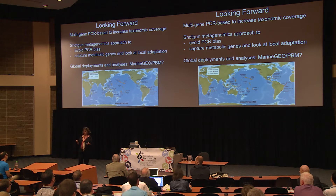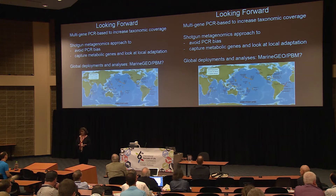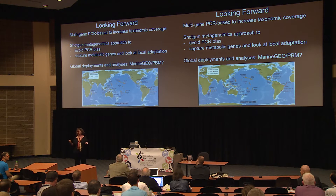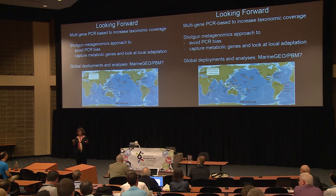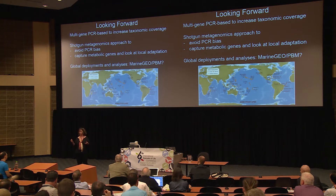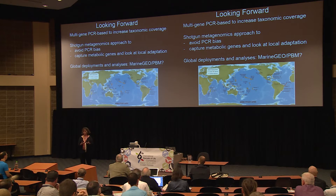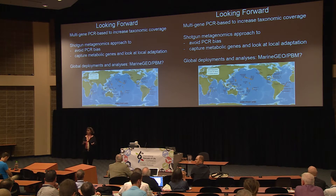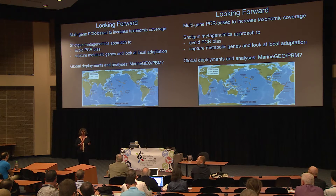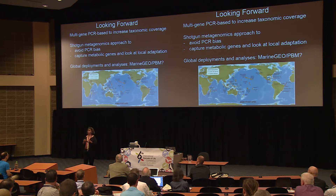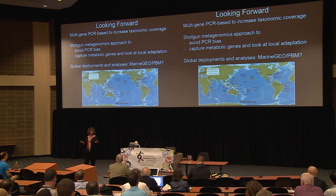Looking forward, there are several ways we can do this better. We can use more genes — all this work was based on the CO1 mini-barcode, but you could add different genes to increase taxonomic coverage. You could also use a shotgun approach, completely bypassing PCR bias, and capture information about metabolic genes the way microbial ecologists do, allowing investigation of local adaptation. This could also scale up significantly as part of the Smithsonian's Tennenbaum Marine Observatory Network, and could be incorporated into a planetary biodiversity mission.